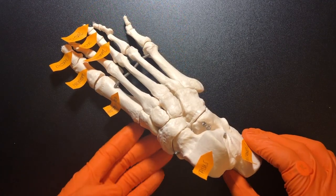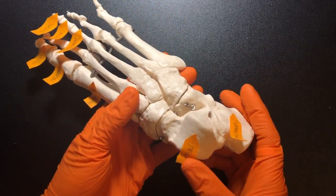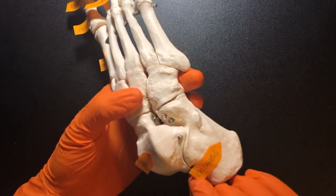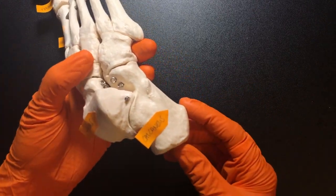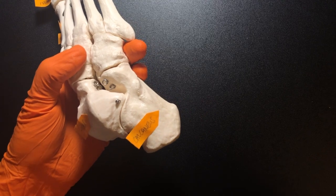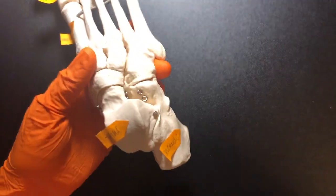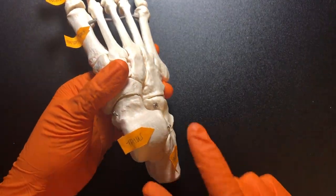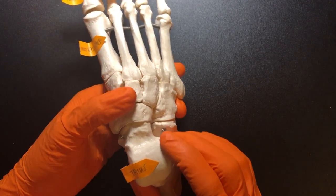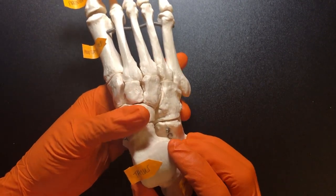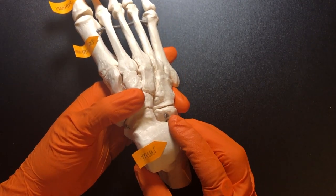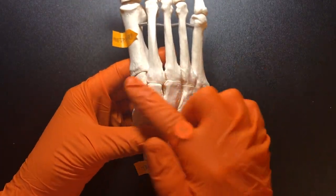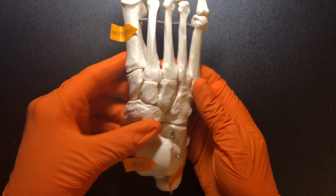This is the right foot. Here we have the calcaneus, which is commonly known as the heel of the foot. And then we have the talus. The talus is going to articulate with the distal end of the tibia. And then that talus connects to these bones.